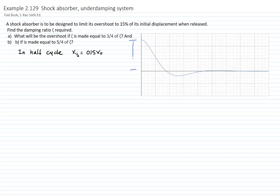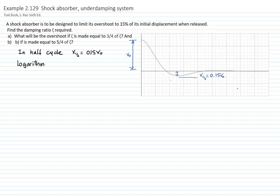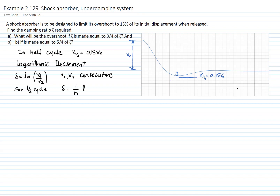This is this dimension right here. To relate two amplitudes in an underdamped system, we will use the logarithmic decrement, which is defined as the logarithm of two consecutive amplitudes. In this case, we will have the initial condition and the half-cycle amplitude. However, since these are two consecutive amplitudes of a whole cycle, we have to divide by n, which is in this case one-half, to be able to relate those two amplitudes.